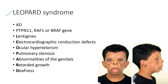Next is LEOPARD syndrome. It is an autosomal dominant condition. LEOPARD is an acronym: L for lentigines, E for electrocardiographic conduction defects, O for ocular hypertelorism, P for pulmonary stenosis, A for abnormalities of the genitals, R for retarded growth, and D for deafness.